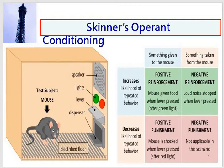Negative reinforcement: the loud noise is stopped when the lever is pressed. Positive punishment: the mouse is shocked when the lever is pressed after a red light. Negative punishment is not applicable in this scenario. In this way, the mouse was placed in the operant conditioning environment, and after dozens of repeated trials, the mouse was able to follow the behavior required by its trainers. Similarly, dogs and other animals are trained using this same system.